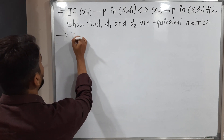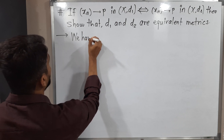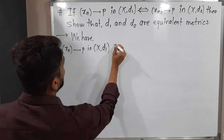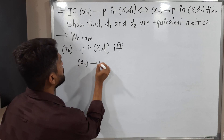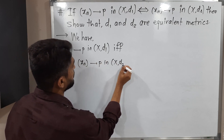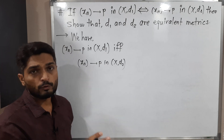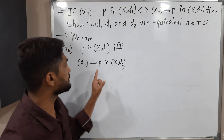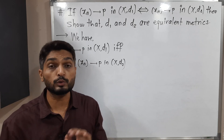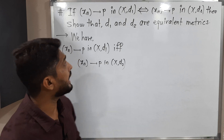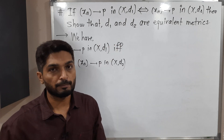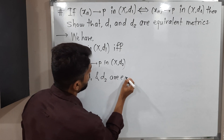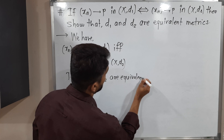We have: Xn converges to P in (X,d1) if and only if Xn converges to P in (X,d2) — this is the given information. That means if any sequence Xn converges to P in metric space (X,d1), then that same sequence converges to the same point in metric space (X,d2), and in the reverse direction also. What we have to prove is that d1 and d2 are equivalent metrics.